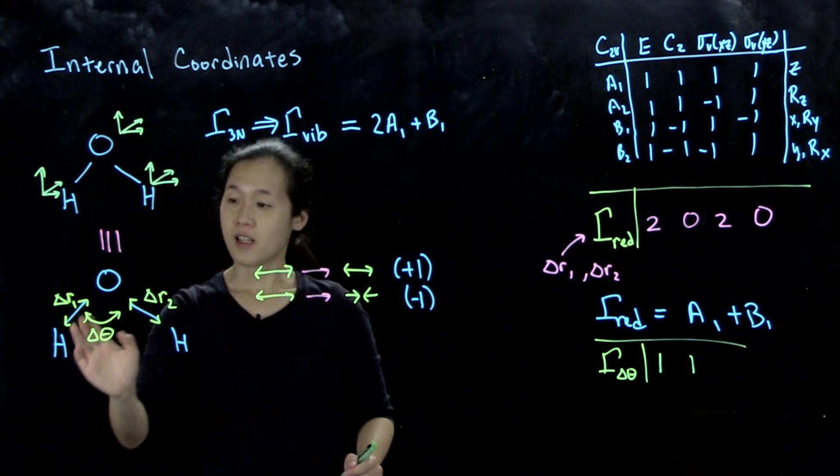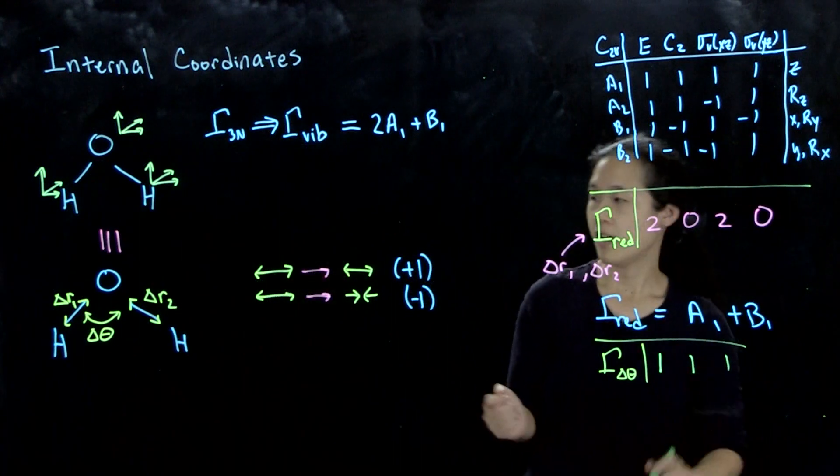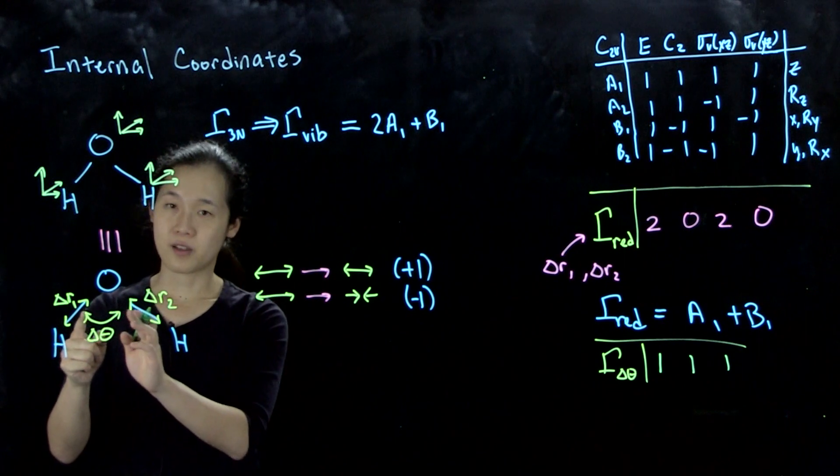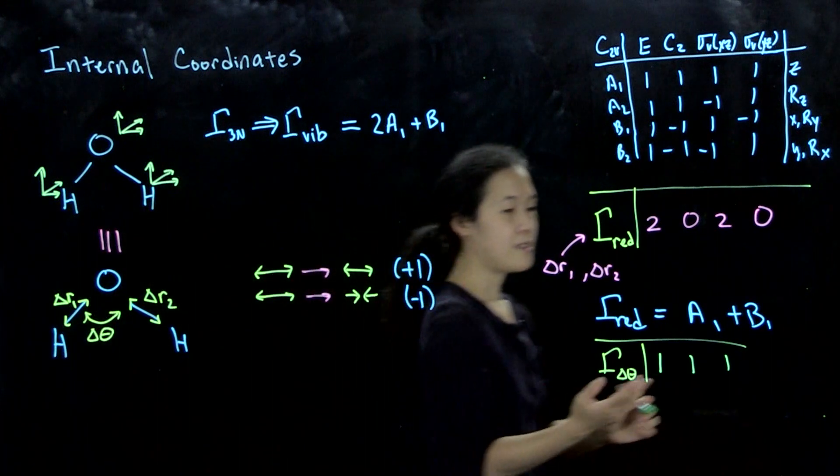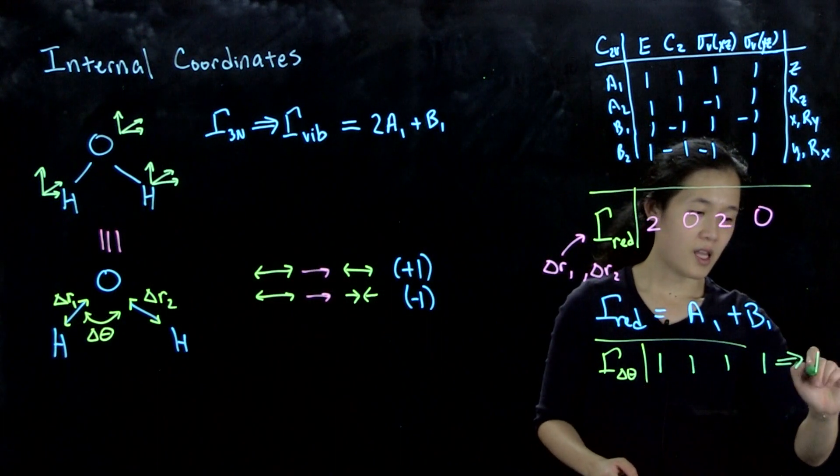If we do a sigma V in the plane, it still looks the same, so it's also a 1. If we do a sigma YZ, these two arrows are flipping directions, but it's still an arrow that looks like this for this bending motion, so this is a 1. So this is going to be equal to A1.